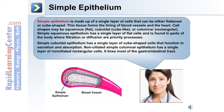Simple cuboidal epithelium has a single layer of cube-shaped cells, and they function in secretion and absorption. Non-ciliated simple columnar epithelium has a single layer of non-ciliated rectangular cells, and it lines most of the gastrointestinal tract.